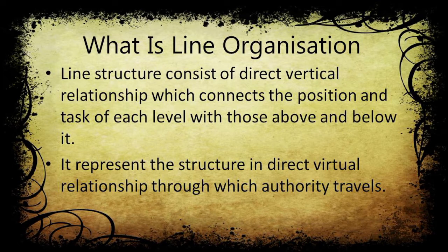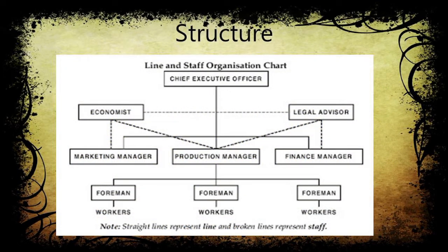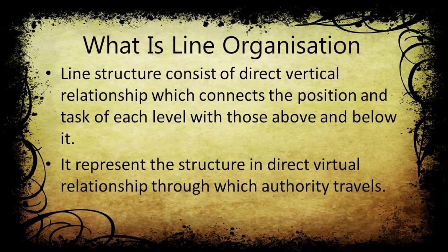Line structure consists of direct vertical relationships, which connect the position and task of each level with those above and below it. For example, a production manager below has a link with the foreman, and above is authorized to report or give feedback to the chief executive officer. It represents the structure through which authority travels from top to bottom.